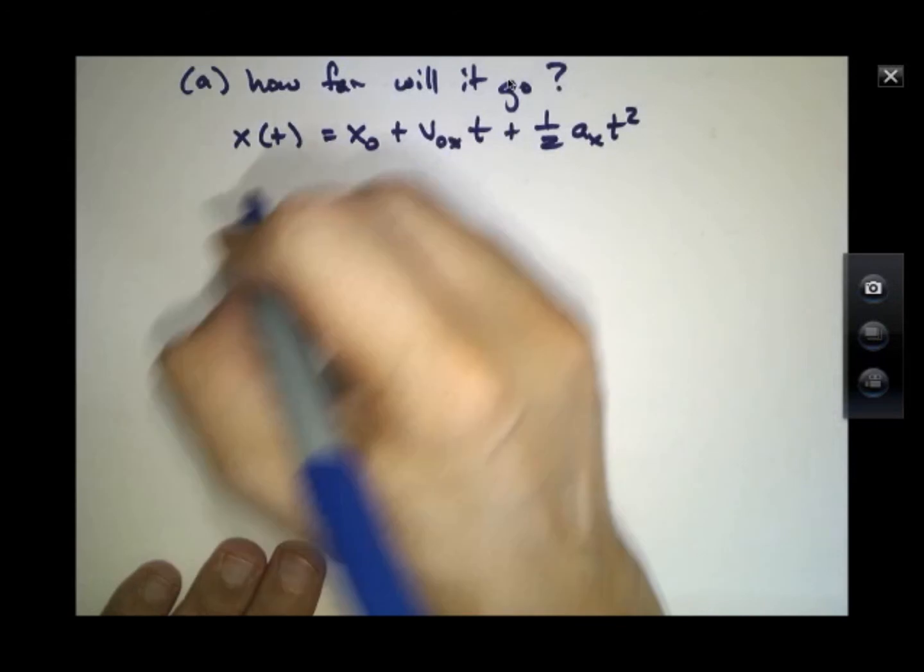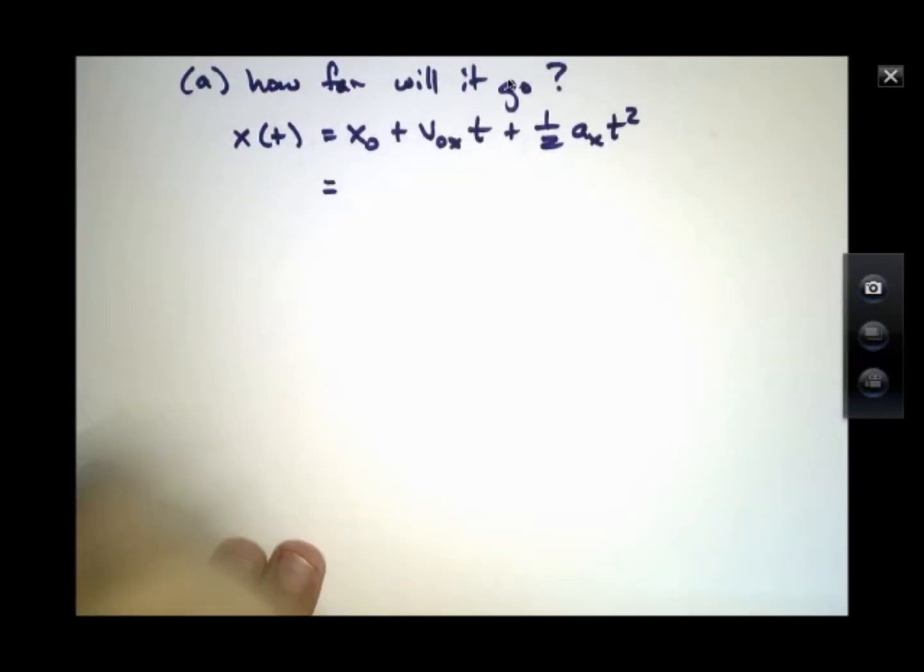And we have to fill in some constants here. We don't know how far it's going to go, that's what we're going to determine. But we're going to say that it started at the origin, so x0 is 0.